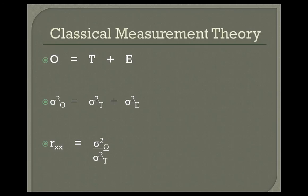We can expand this to say that the variance sigma-squared of the observed score equals the variance of the true score plus the variance of error. Reliability, R sub xx — the correlation of an instrument with itself — equals the ratio of the true score variance to the observed score variance. If your observed score is really close to your true score, error approaches zero, the error variance approaches zero, and the ratio approaches one, giving a high reliability correlation.